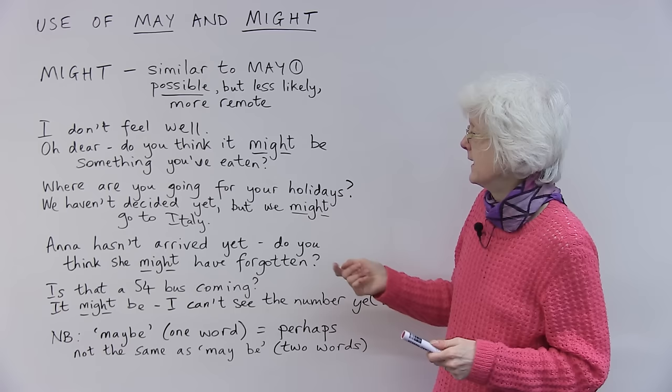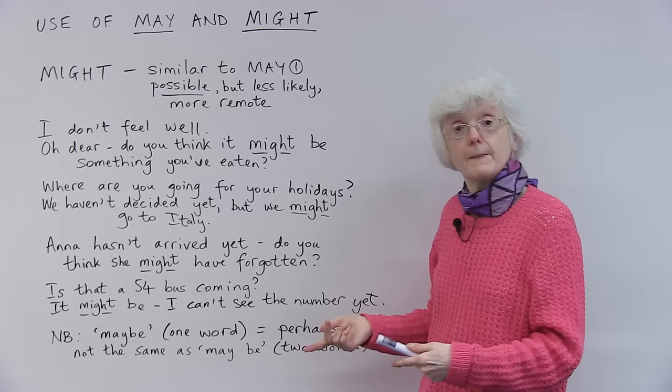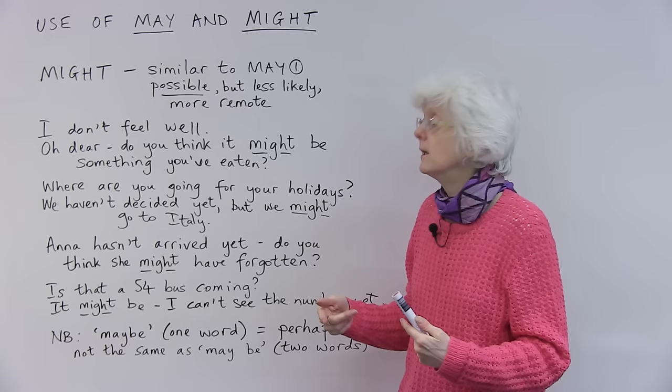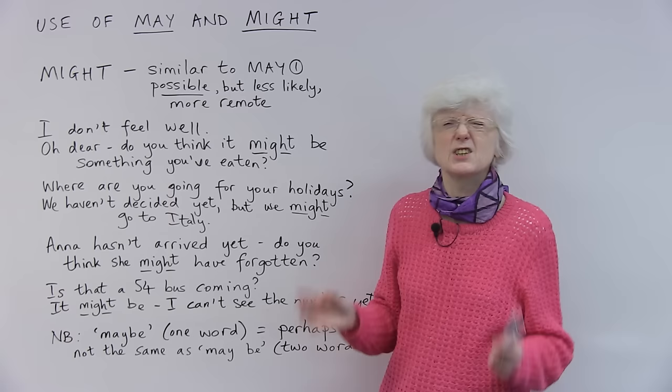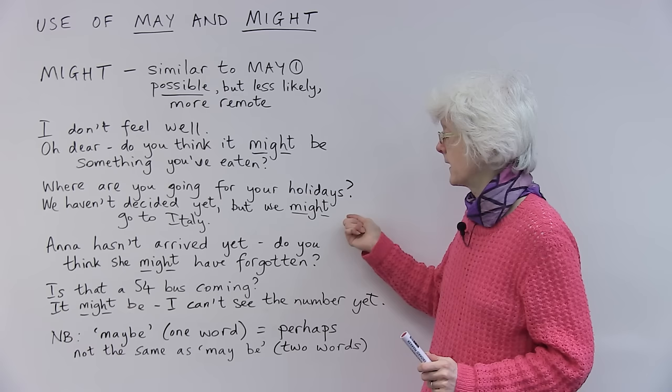Another example. Someone asks, where are you going for your holidays? Where are you going for your holidays? And I might reply, we haven't decided yet, but we might go to Italy. It's possible. Possible, but not definite. We might go to Italy.